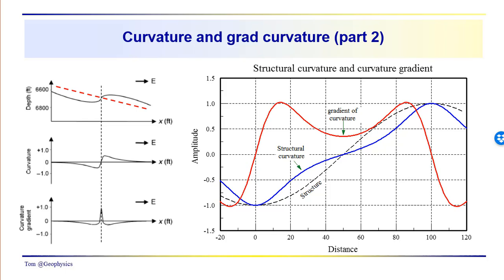You can imagine here in this fold that the steeply dipping limb here might be faulted. And if a fault were to cut through the limb over here, that this would be a more intensely fractured zone. Down here we have the curvature — you can see it drops off to a minimum and then rapidly rises up to a maximum. And then the curvature gradient is basically a spike located at the inflection point in this fold.